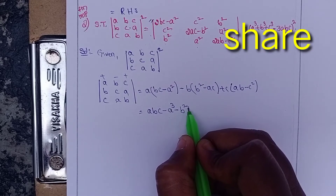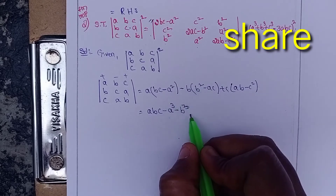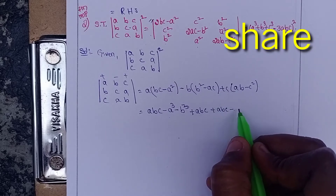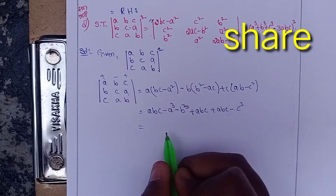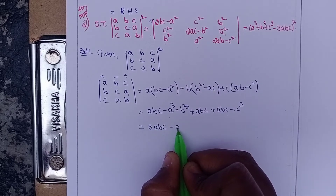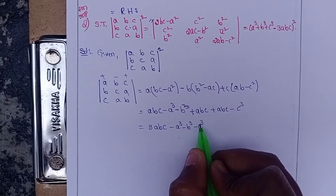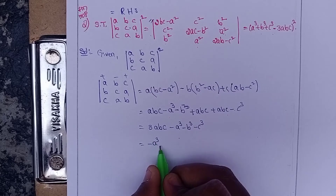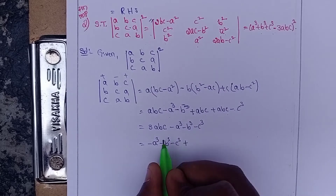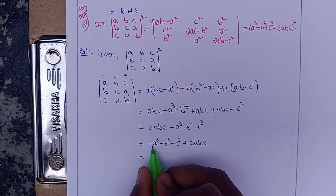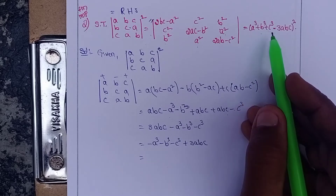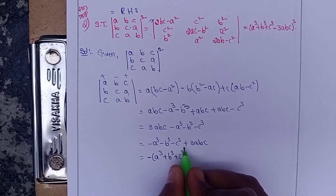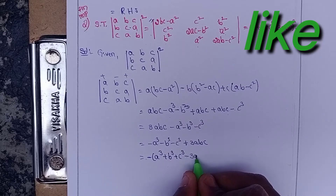Now multiplying out: a·bc gives -a³. Then multiply with b: -b³ here. Next, plus abc plus abc plus abc minus abc minus abc minus c³. Collecting terms: a³ terms, b³ terms, c³ terms, and the 3abc terms. With signs plus/minus giving us: a³ + b³ + c³ - 3abc. This is the RHS.